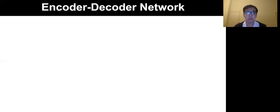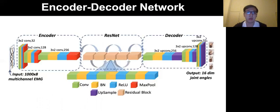Now let's move to the core techniques we applied in the system. As the figure shown on the screen, we use an encoder-decoder architecture for converting our input multi-channel EMG signals to the output continuous hand pose, represented as 16-dimensional joint angles. The encoder and decoder parts are built by convolution layers.